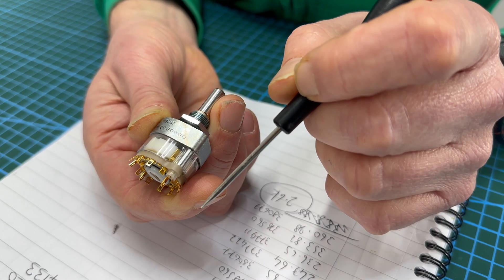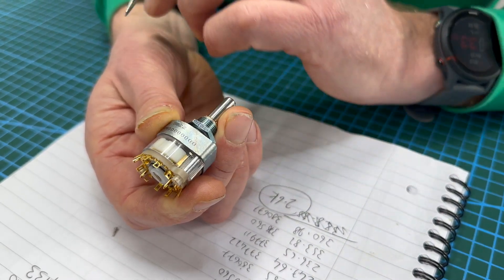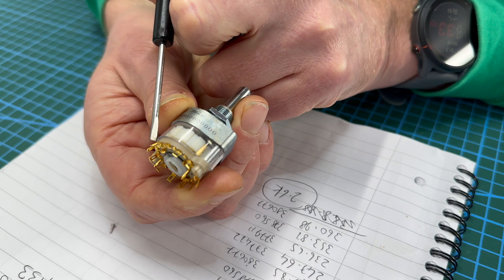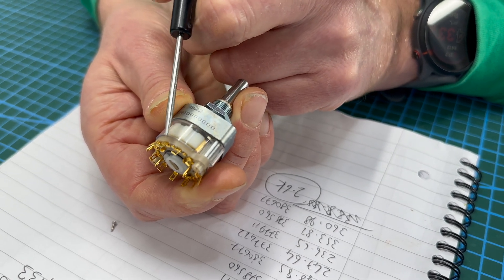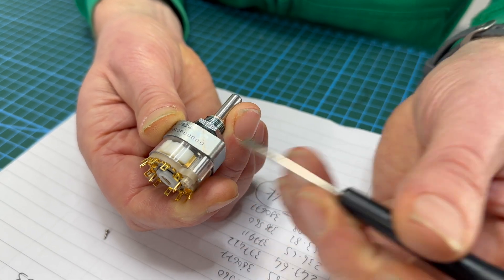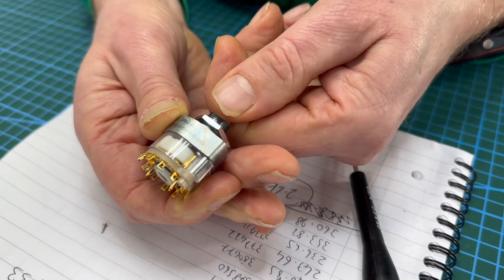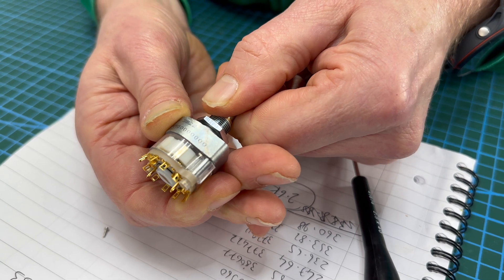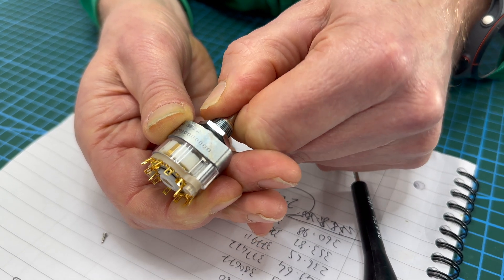So you want to make it two pole four way so you basically want it to stop when it gets to here. So there's position one, two, three, four. You can see the gold contact strip there.